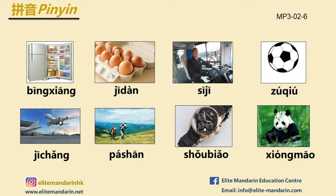Look at the pictures and read the disyllabic words aloud: 冰箱, 鸡蛋, 司机, 足球, 机场, 爬山, 手表, 熊猫.